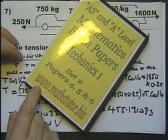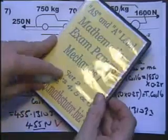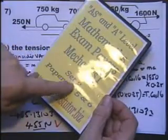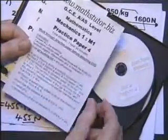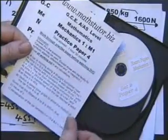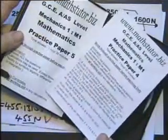You need to visit www.mathstutor.biz if you want to see the rest of this question 7. And the rest of the paper. Because this is paper 4 from Mechanics, set 2. The paper is here. If you go to www.mathstutor.biz you'll have the opportunity of buying this set of three papers.